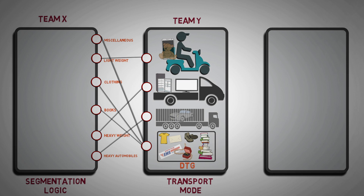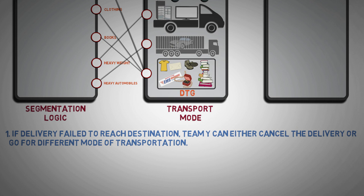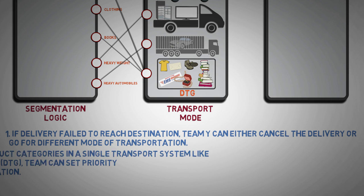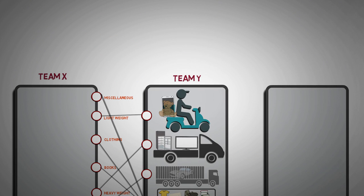In addition to that, team Y also has to decide: 1, if delivery failed to reach destination, team Y can either cancel the delivery or go for different mode of transportation. 2, if there are multiple product categories in a single transport system like dedicated transport group, team can set priority as per requirement or situation.